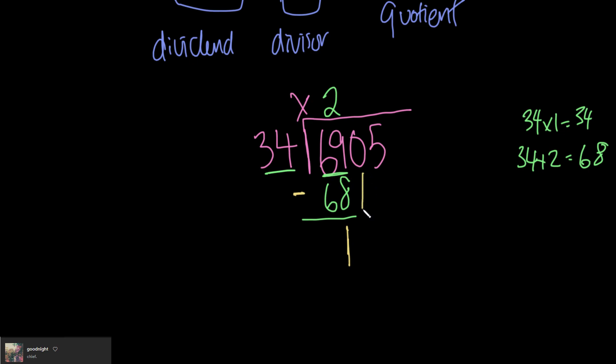I'm going to have to bring down this 0 here. And we do the exact same thing. We repeat this process. So just to recall, first we multiply, then after multiply, we subtract, and then we bring down, and then repeat.